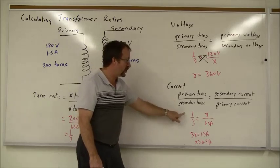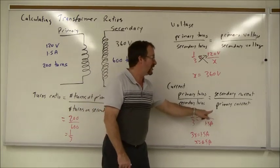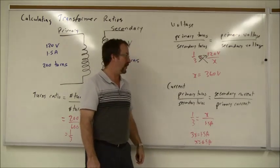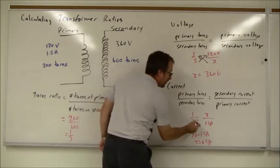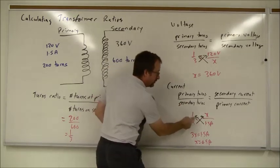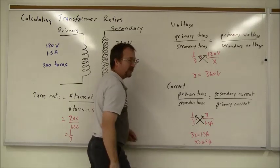So my turns ratio is one to three, primary to secondary. My current ratio is secondary to primary. So secondary I don't know, I put an x here. That's 1.5 in the primary. Again, we cross multiply and solve these things. 3x equals 1.5 amps, divide both sides by three and get x equals 0.5 amps.